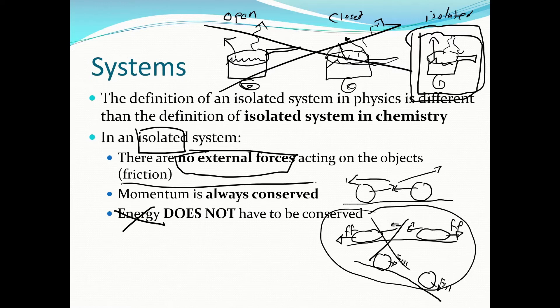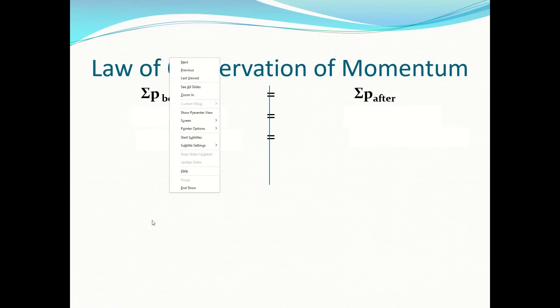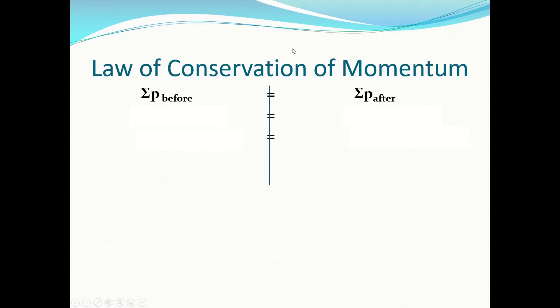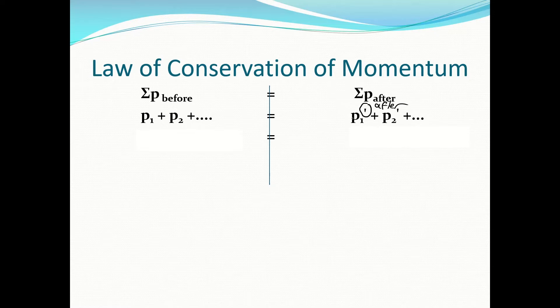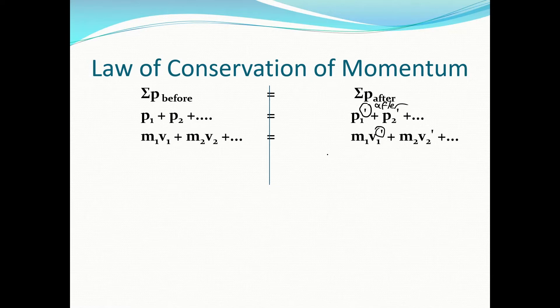The law of conservation of momentum is way easier than the law of conservation of energy. Momentum before equals momentum after. You might have one or more momenta before — M1V1, M2V2 — and one or more after. We use a little tick mark to mean 'after': M1V1′, M2V2′. That's our notation, and that's how we set it up.